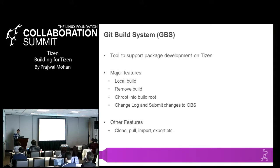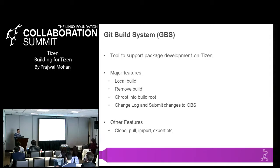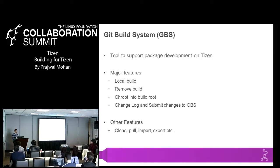What local build does is: if you have a package checked out, you can build it in your local system once you point it to a repository of your choice — in this example, Tizen. It would get all the RPMs required to build your package and builds it in a chroot. Remote build does the building on OBS. If you have checked out a package from OBS, it packages it in a way that OBS understands — a tarball, spec file, and other changes — and submits it to OBS in your home project. Chroot into the build root is a very useful feature if you have build errors, letting you debug missing packages or dependencies.